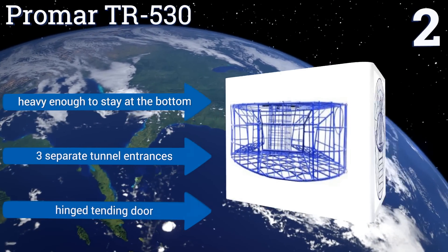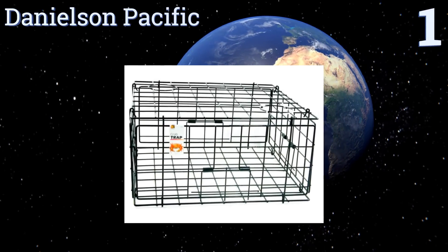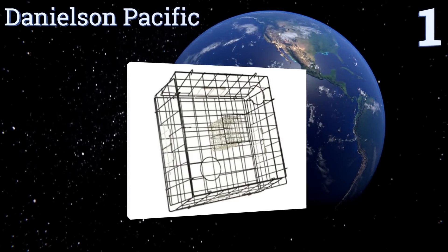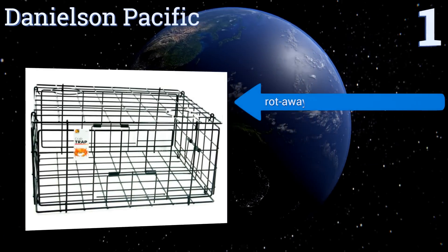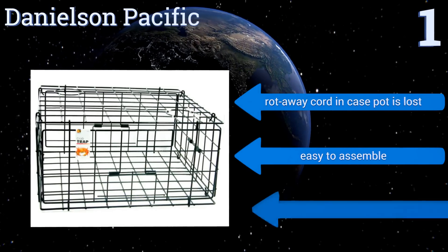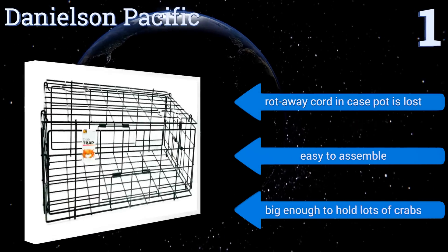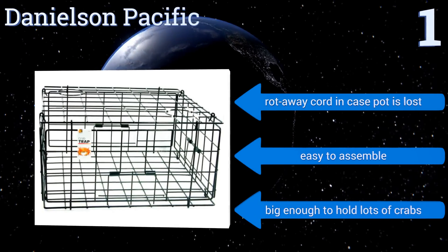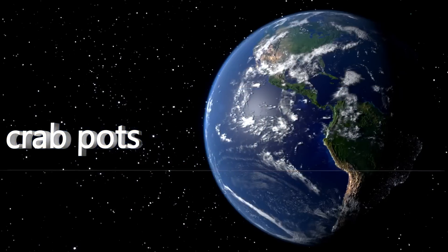And taking the top spot on our list, the Danielson Pacific are made of collapsible vinyl coated steel wire, so they're easy to transport while still being rugged enough to withstand the elements. They have four entrance doors along with two escape rings, ensuring you'll get only the biggest crabs. They boast a rot-away cord in case the pot is lost, and they're easy to assemble. They're big enough to hold lots of crabs.